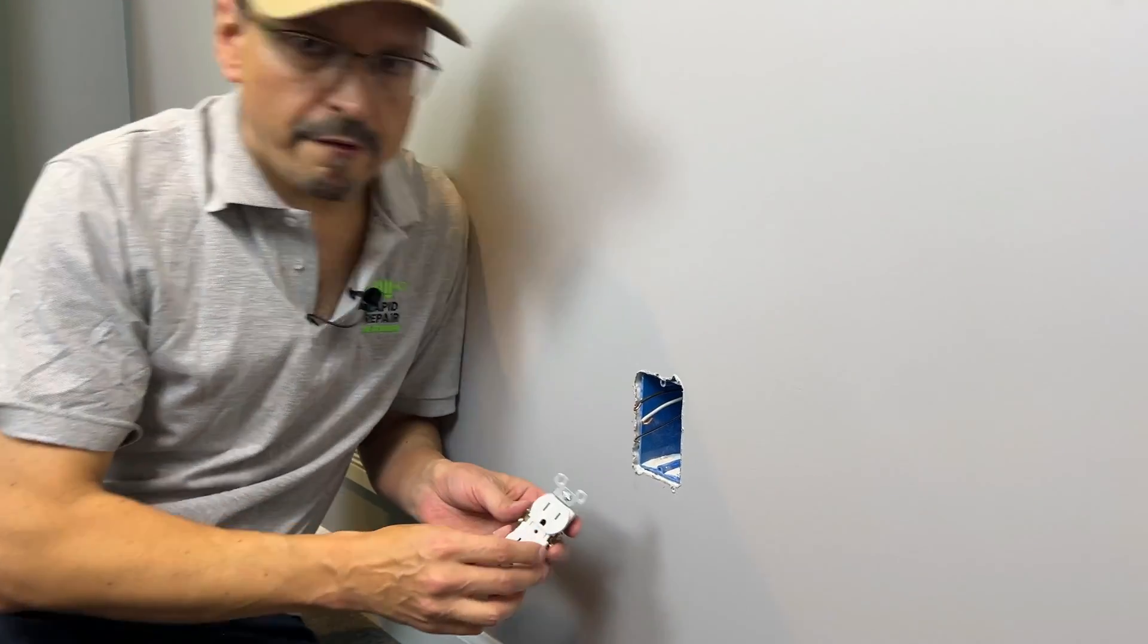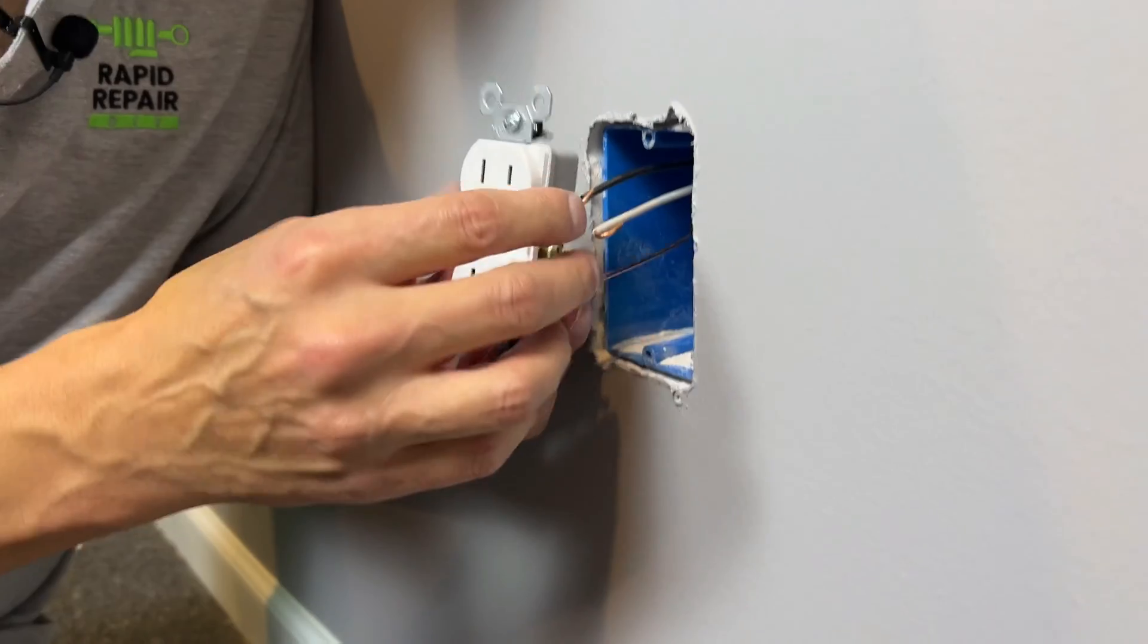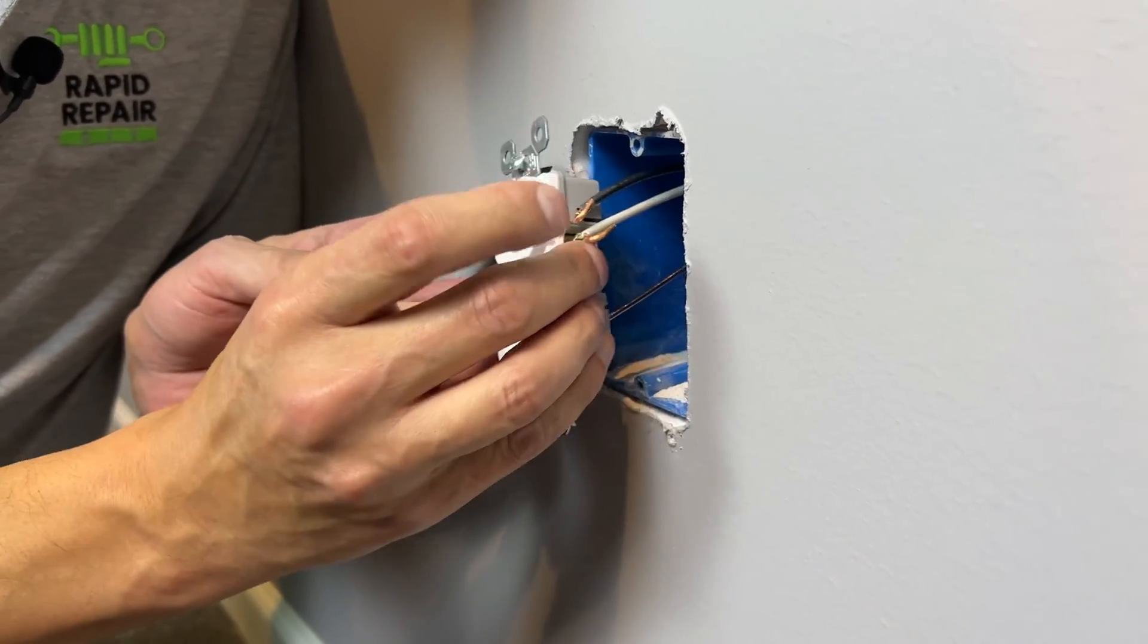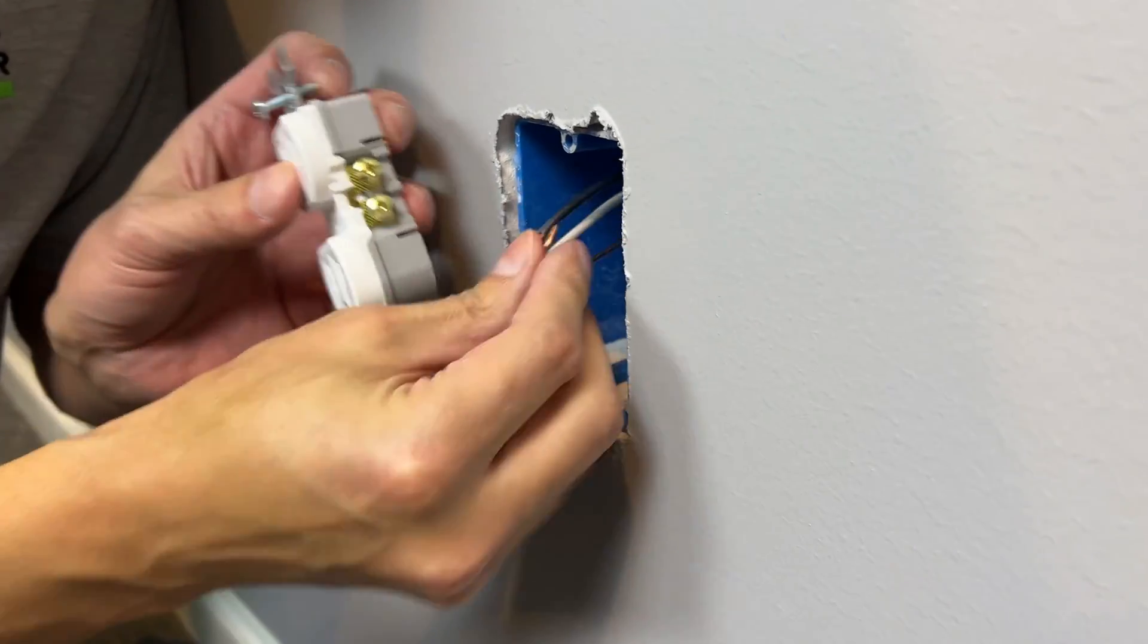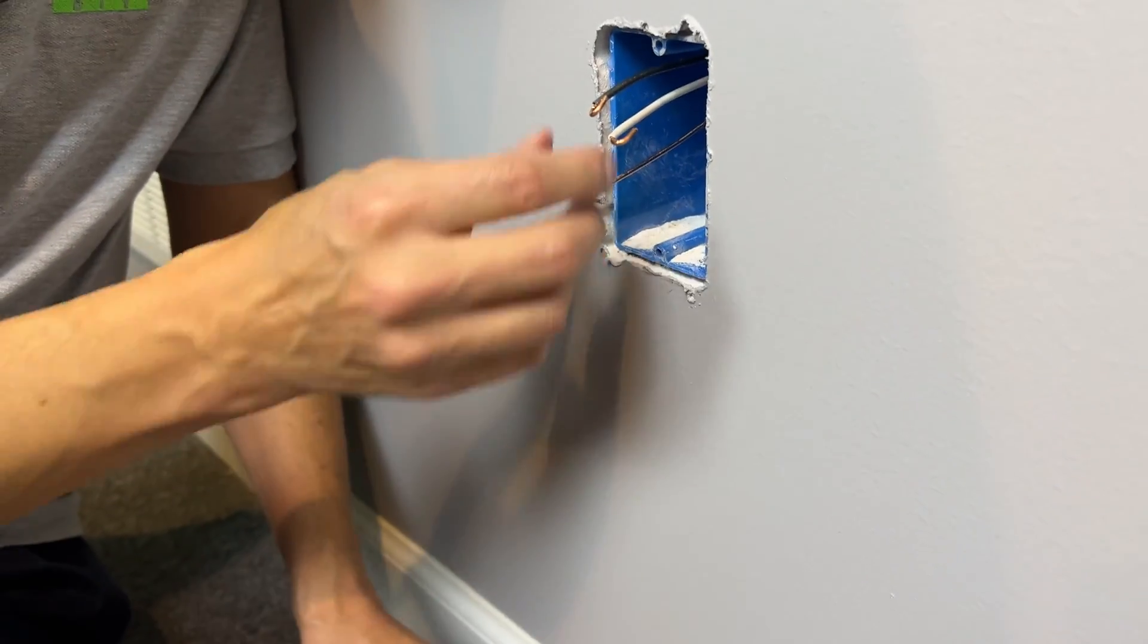There's no effective way to get your new outlet or switch, depending on what you're working on, connected properly and safely and then fold it back in the box. It's just too short to really work on. So you need to extend those wires and how are you going to do that?